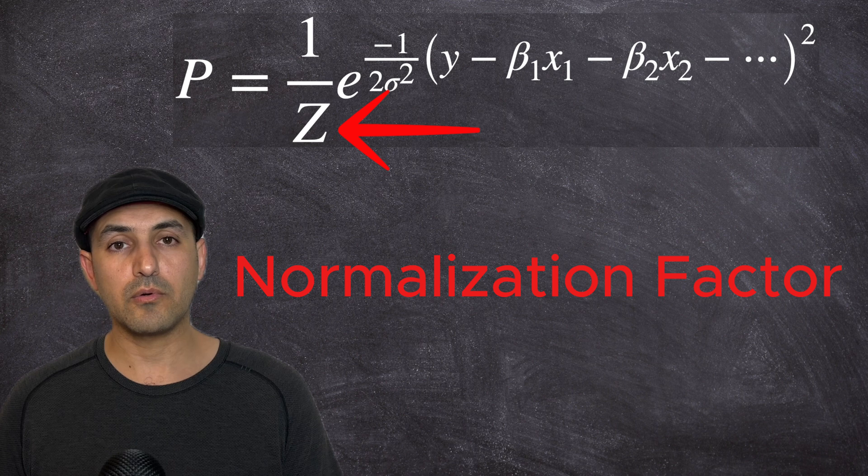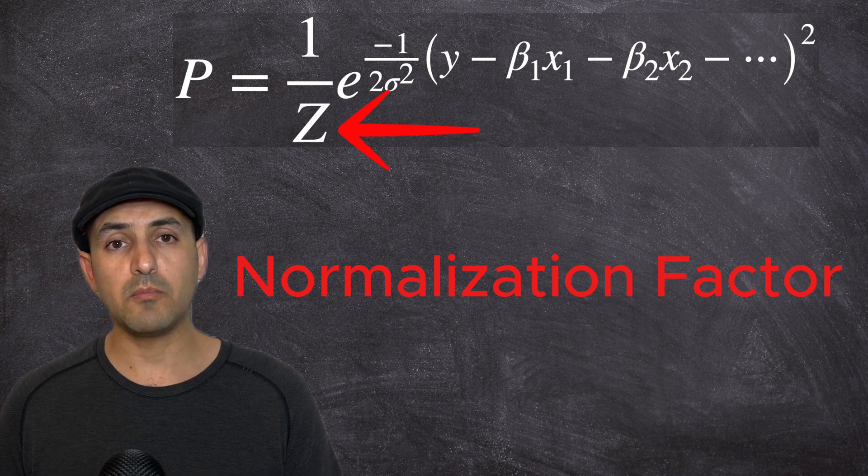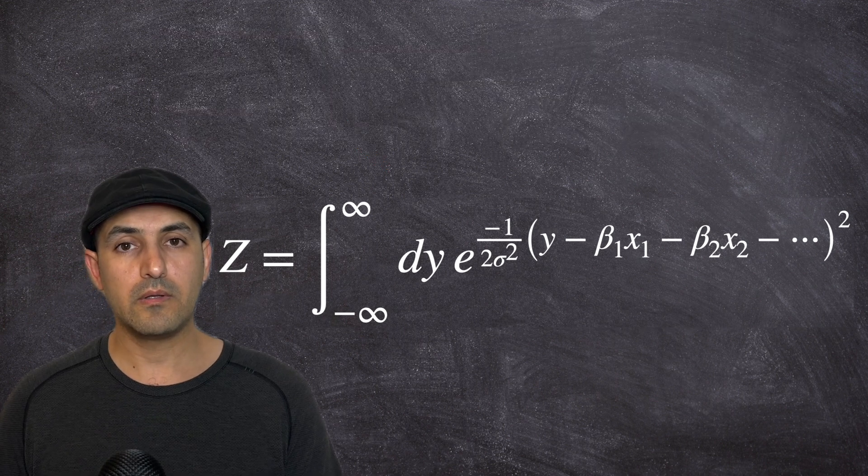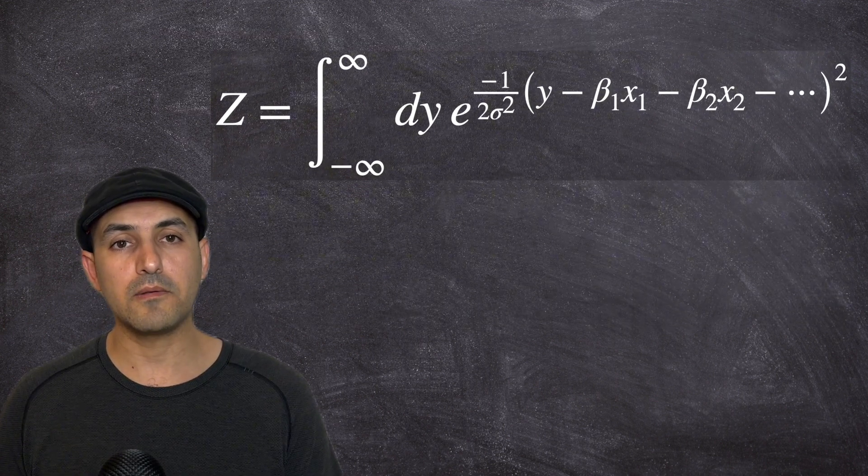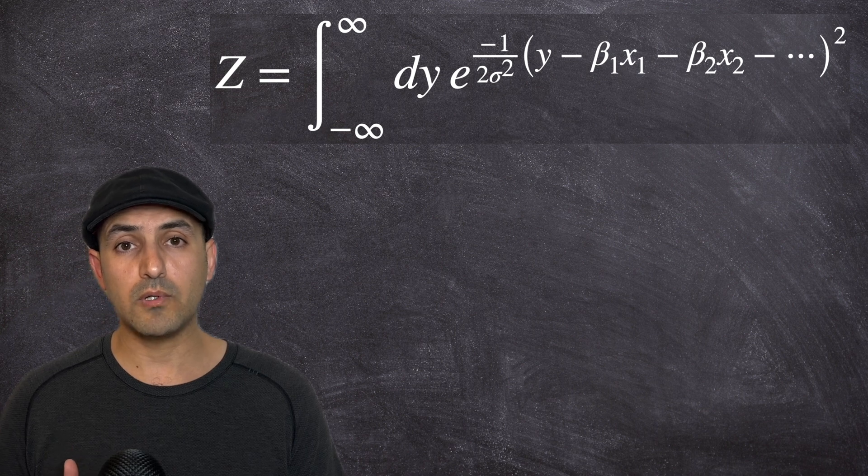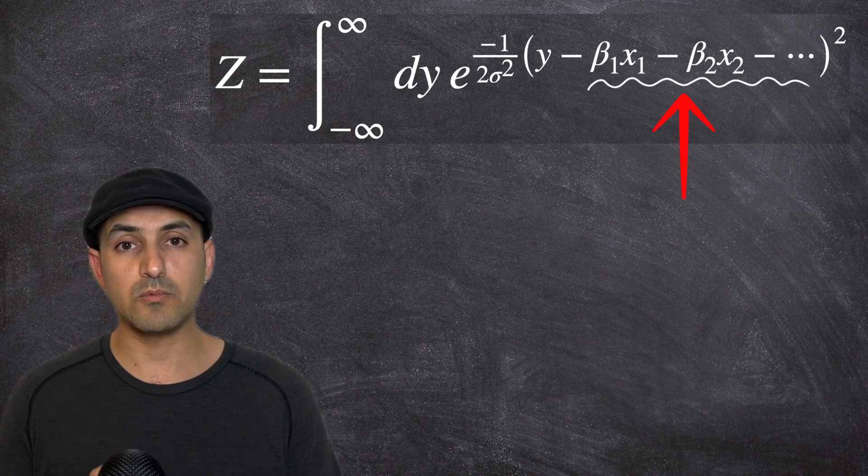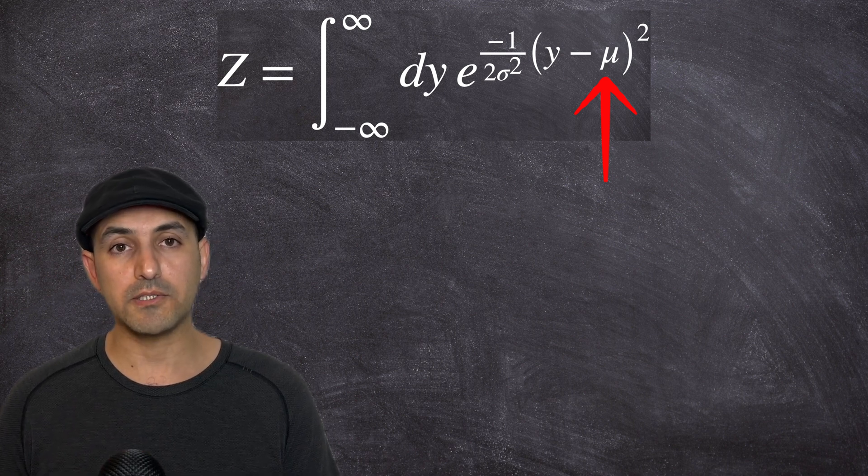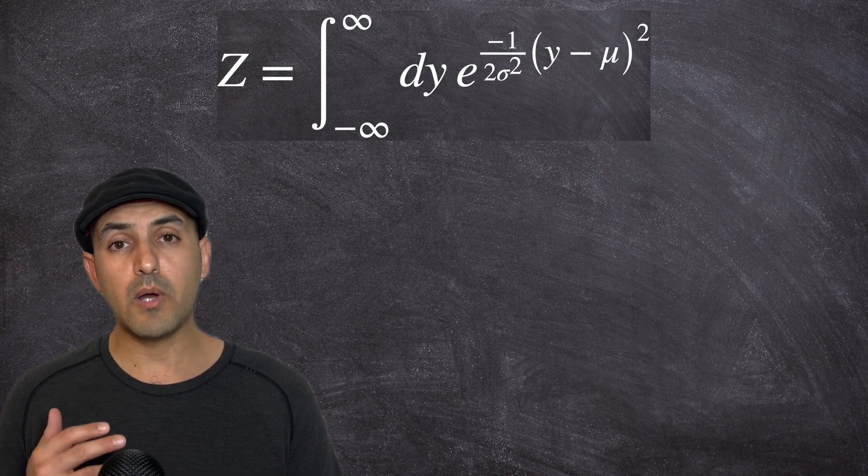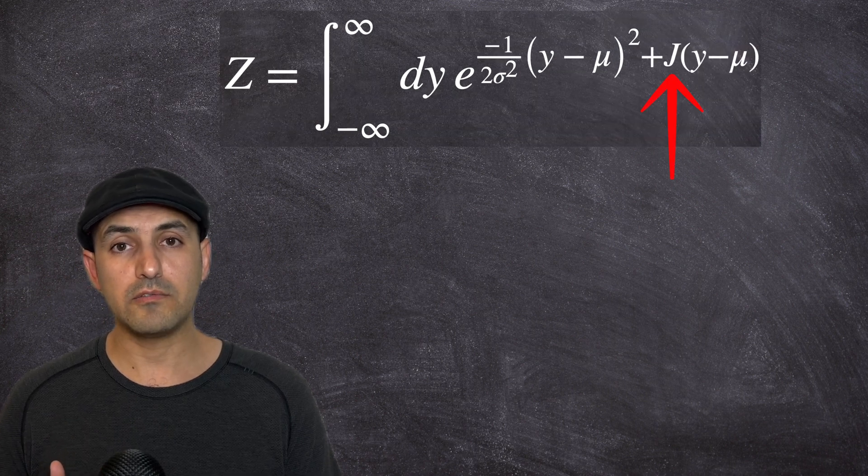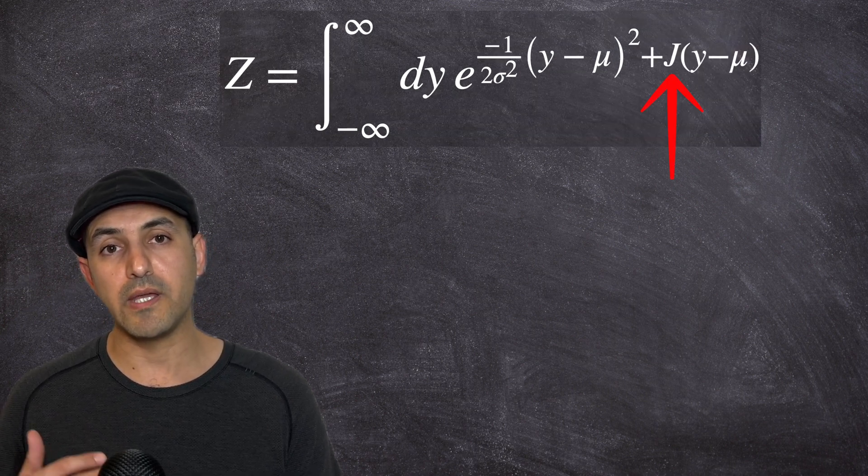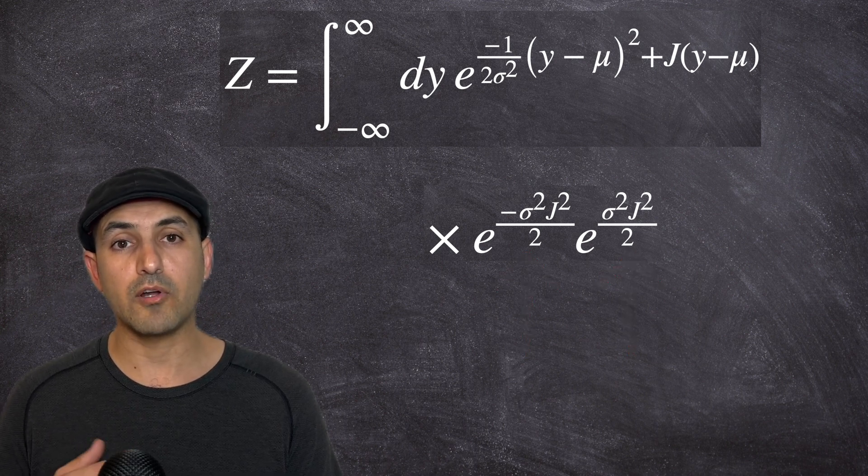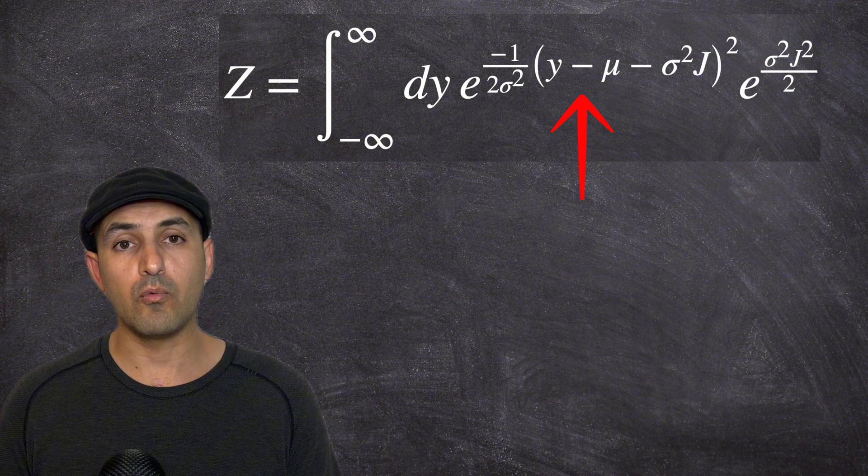Meanwhile, it is a normalization factor, meaning that if I sum over the probabilities of all the Y values, it must be equal to one. That is the definition of probability. To keep the notations simple, let me replace these terms with mu. I will replace the mu with the actual terms at the end of the calculations. I will now add an auxiliary variable J, which I need to set to zero at the end.